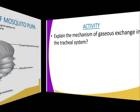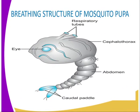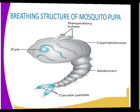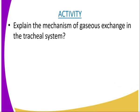What we are seeing here is the mosquito larva, whereby we can see the eye, the tubes which are used for respiration, and the cephalothorax. Having done that, we can have the following activity, whereby you are required to explain the mechanism of gaseous exchange in the spiracle system of an insect.